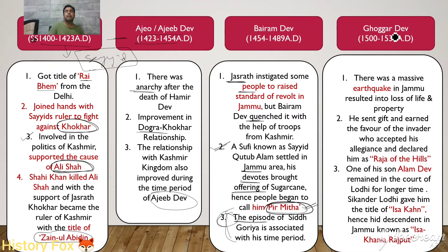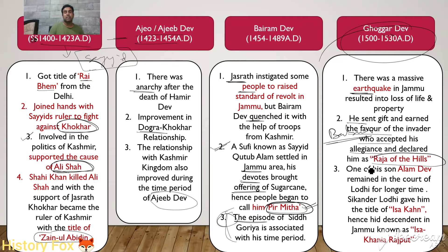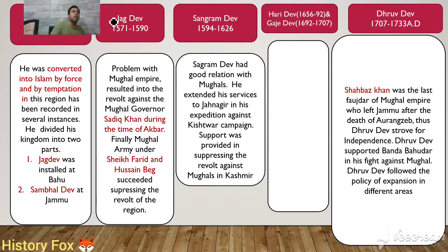Bairam Dev was succeeded by Gokhar Dev. There was an earthquake in Jammu which resulted in the loss of property and life. Gokhar Dev sent gifts and earned the favor of the invader Babar, who accepted his allegiance and declared him raja of the hills. One of his sons, Alam Dev, remained in the court of the Lodi dynasty for a long time. Sikandar Lodi gave him the title of Isa Khan, and his descendants are known as Isa Khan Rajputs, who are very popular in Jammu even today.